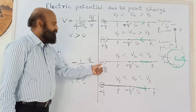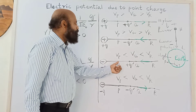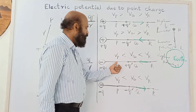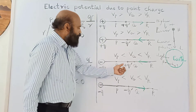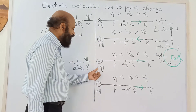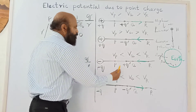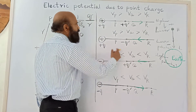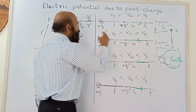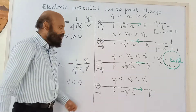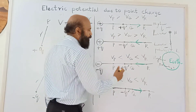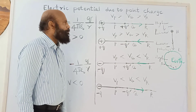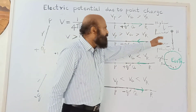Now consider a negative source charge. For a negative charge, nearer points are at lesser potential, so Vp < Vq (P is nearer). Place a positive test charge: it is attracted by the negative source and moves toward it — from higher to lower potential. For a positive source, nearer points are at higher potential; for a negative source, points farther away are at higher potential. In both cases, the positive test charge moves from higher to lower potential.